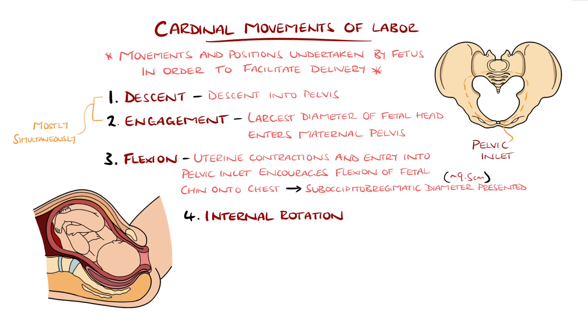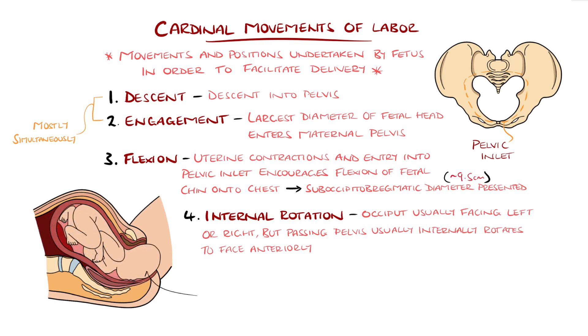Next is internal rotation. The shape of the pelvic floor encourages rotation as the fetus passes through the pelvis. Initially, during descent and flexion, the fetus is positioned so that the occiput is facing either left or right, but as it passes through, it completes a 90 degree rotation so that typically it is facing anteriorly, which allows the shoulders to align with the transverse diameter of the pelvis. This stage is typically complete by the start of the second stage of labour.